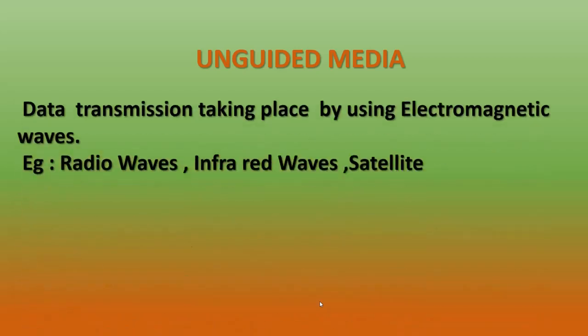The second type is unguided media. Unguided media means data is not transmitted using a wire. Data is transmitted in the form of electromagnetic signals — there is no cable to connect and transmit data between two devices. Different types of unguided media are radio waves, infrared waves, and satellites.